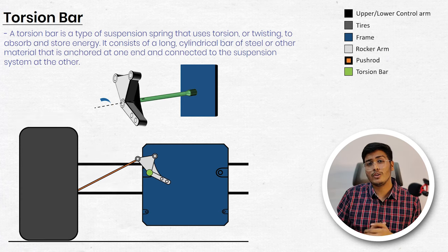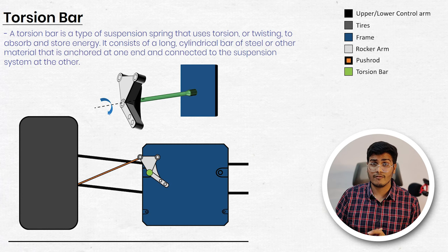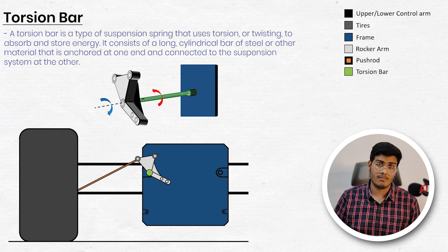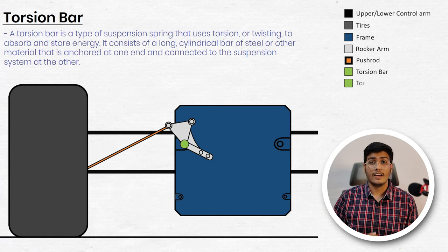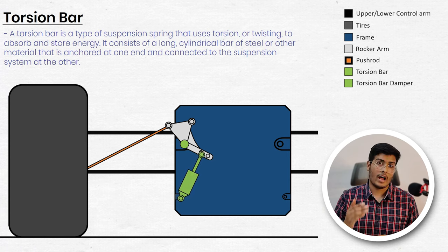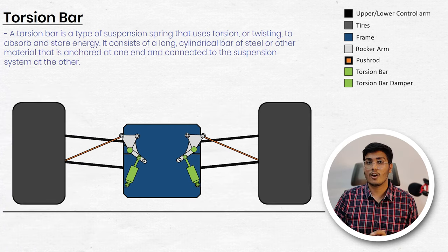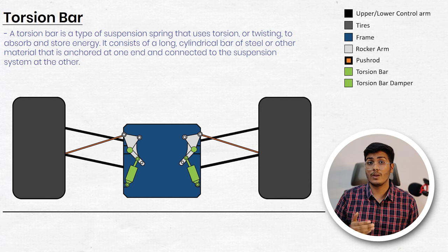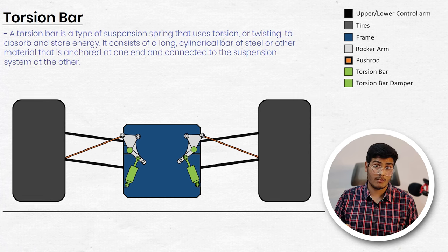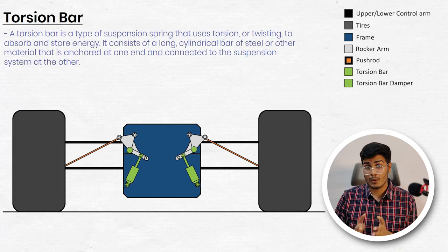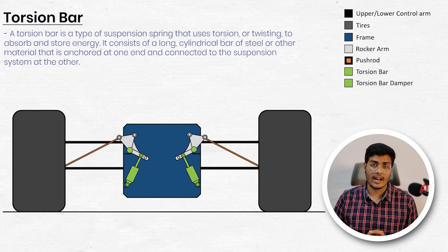So when the rocker arm rotates, it will rotate the torsion bar and the torsion bar will apply a resisting force in the opposite direction. In order to damp this resisting force from the torsion bar, we use dampers in the assembly. Here the damper is connected between the rocker arm and the frame of the vehicle. When the tire moves up, it will rotate the rocker arm, which rotates the torsion bar, and the torsion bar applies a resisting force which is damped by the damper to provide a smoother ride.